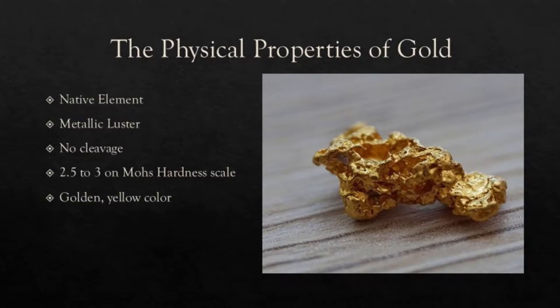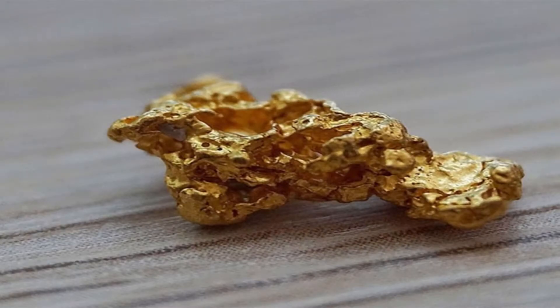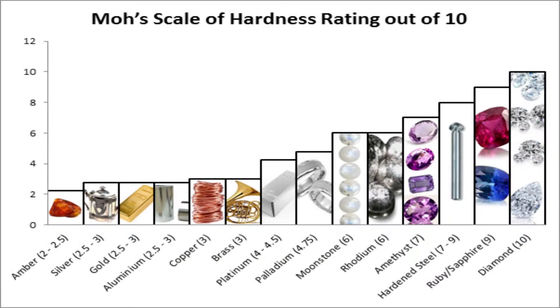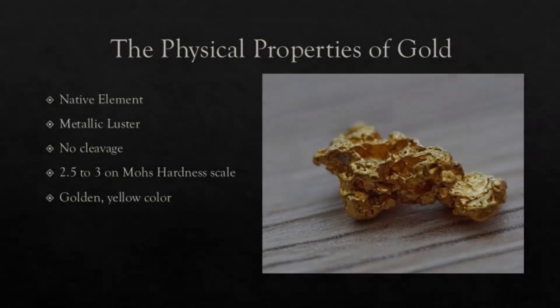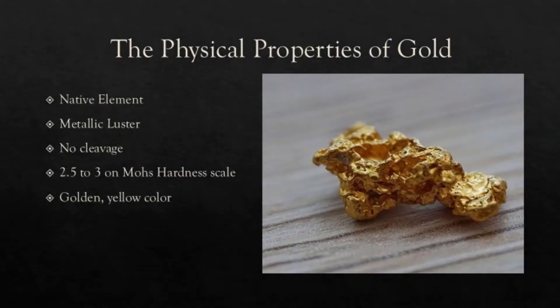Moving on to the physical properties of gold. Gold is a native element, meaning that it is an element that occurs naturally in a relatively pure form. As can be seen from this picture it has a metallic luster. It has no cleavage but it does have a jagged fracture. It also ranges from 2.5 to 3 on Mohs hardness scale, which means that it can be scratched fairly easily. Gold also exhibits a golden yellow color.